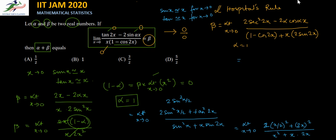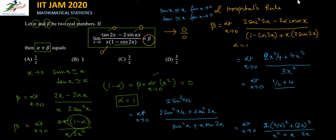This becomes limit x tending to 0 of 2(x²/4) plus 4x² over x² plus 2x², which is 3x². We can cancel out the x² terms. The numerator gives x²/2 plus 4x², so that is 9x²/2, and the denominator is 3x². This gives (9/2) divided by 3, and canceling 3 and 9 we get 3 by 2.